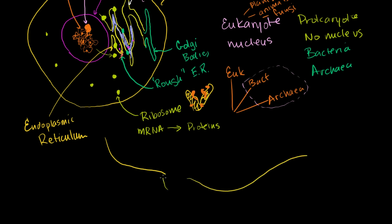Chloroplasts are other organelles. Just like mitochondria, they have their own DNA and their own ribosomes. The belief is that they were once independent prokaryotes that learned to live in symbiosis inside larger eukaryotic cells.